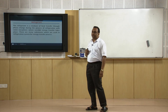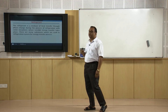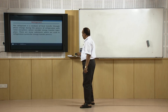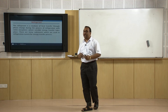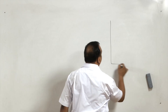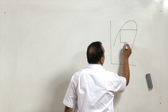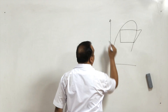Regarding the definition of refrigerant: a refrigerant is a medium of heat transfer through phase change during the process of refrigeration, with some exceptions where sensible energy transfer takes place. There are many substances used in refrigeration systems for energy transfer. Mostly refrigerants are fluids used in refrigeration systems where heat transfer takes place through phase change — either boiling or condensation — as you can see in a p-v diagram.